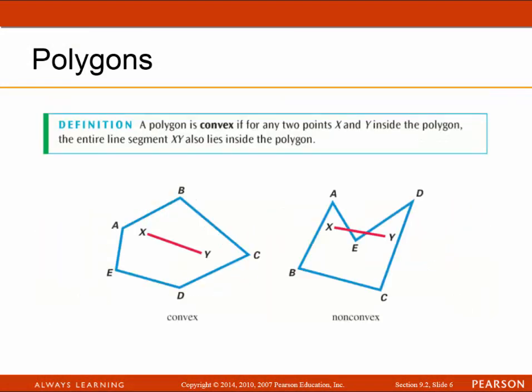Next, we're going to define whether a polygon is convex or non-convex. A polygon is convex if for any two points x and y inside the polygon, the entire line segment xy also lies inside the polygon. The first polygon shown is convex because you can connect any two interior points with a line segment and it stays within the polygon. In the second one, it's non-convex because for some points x and y, part of the line segment falls outside the polygon.